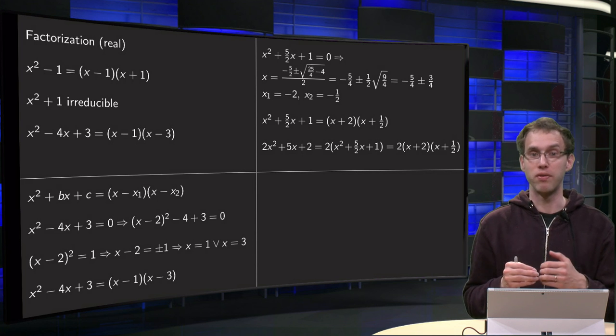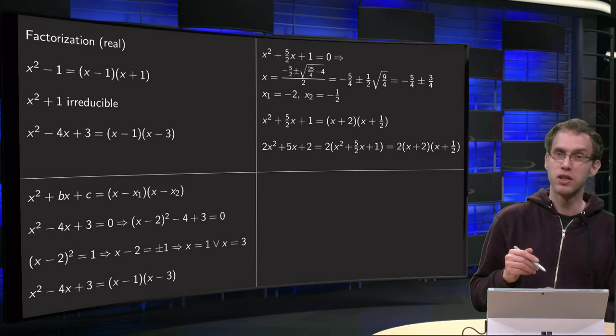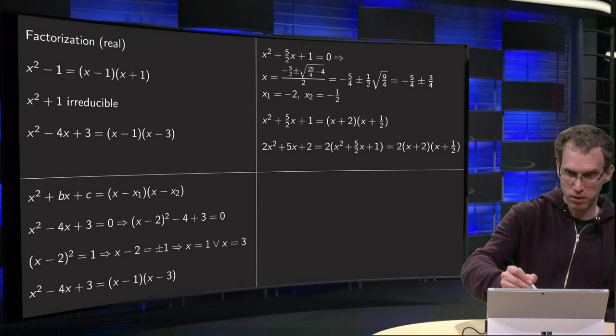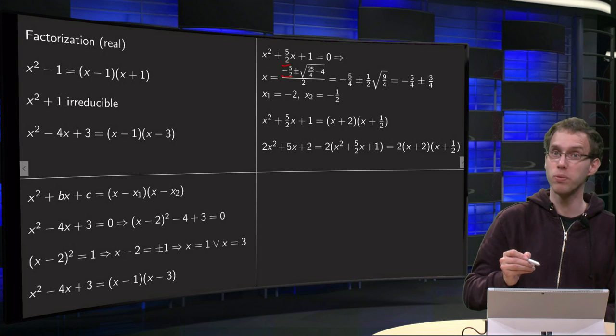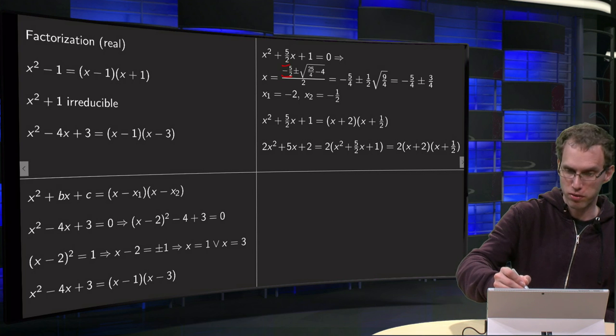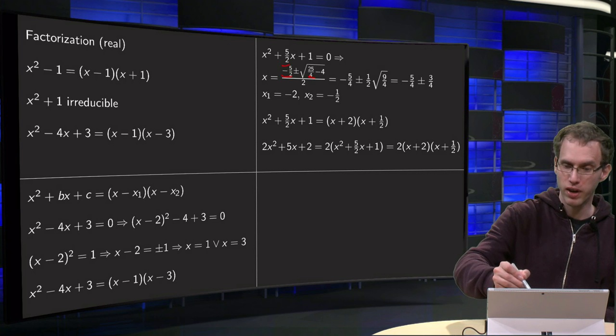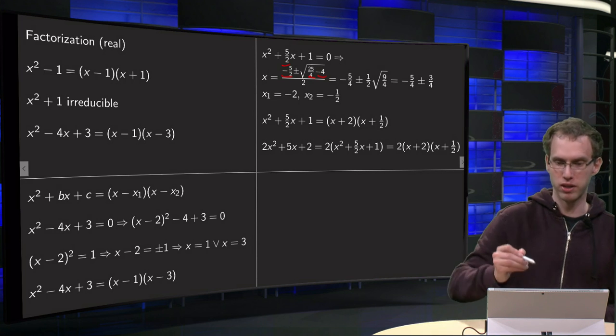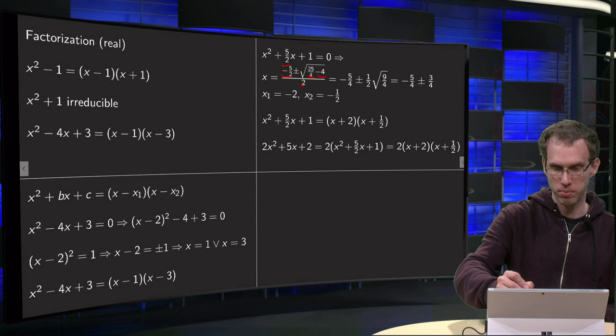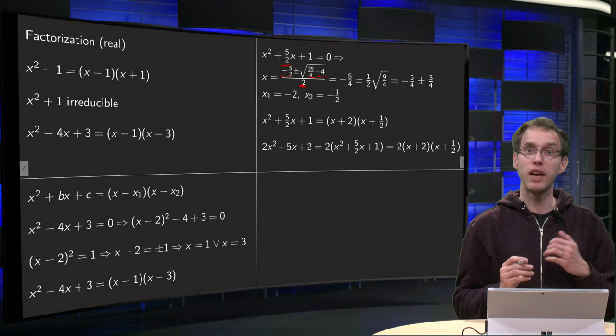So we have x = -b, so here b = -5/2, so -b = 5/2, plus or minus square root of b², 25/4, minus 4ac, where a = 1, c = 1, so -4, divided by 2a, divided by 2.